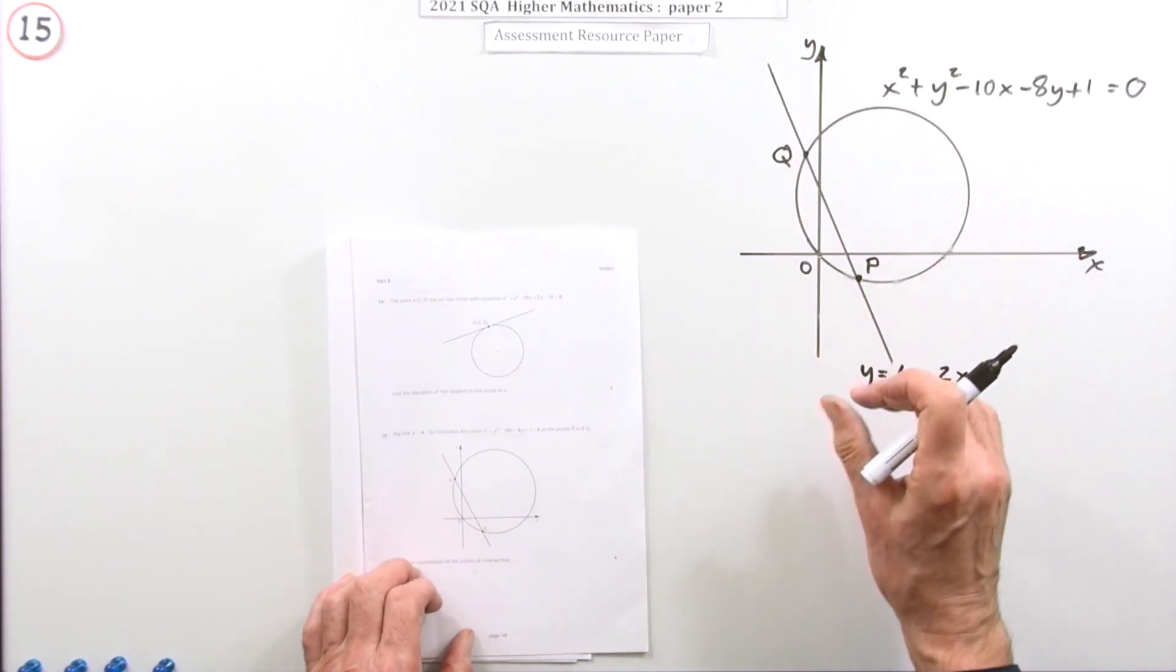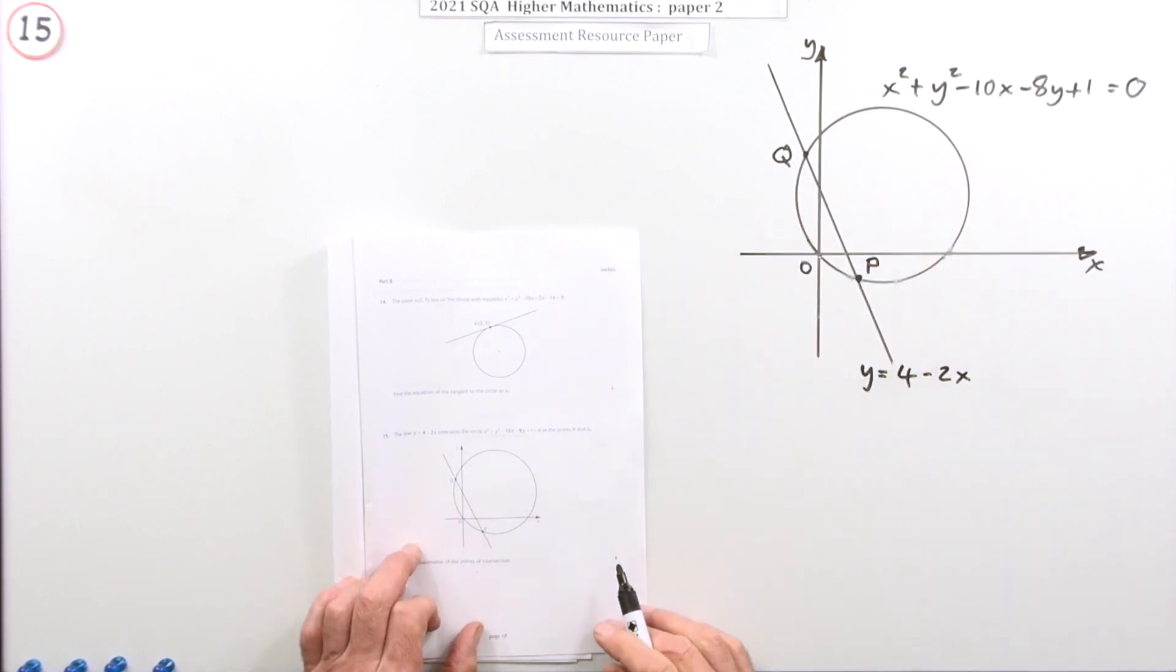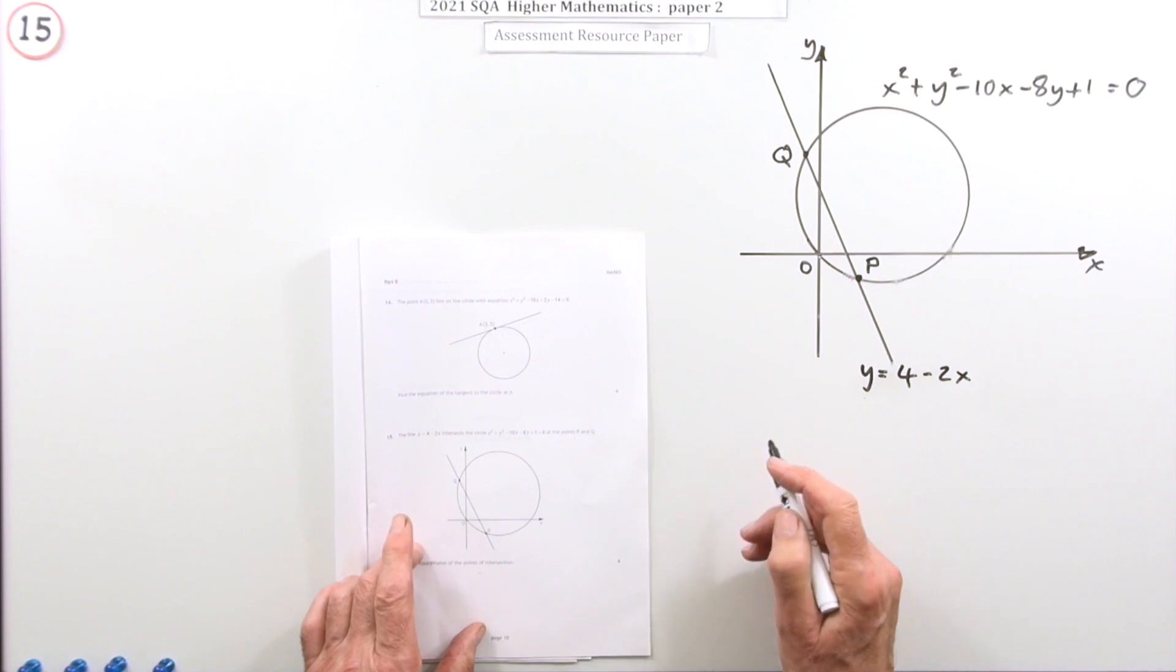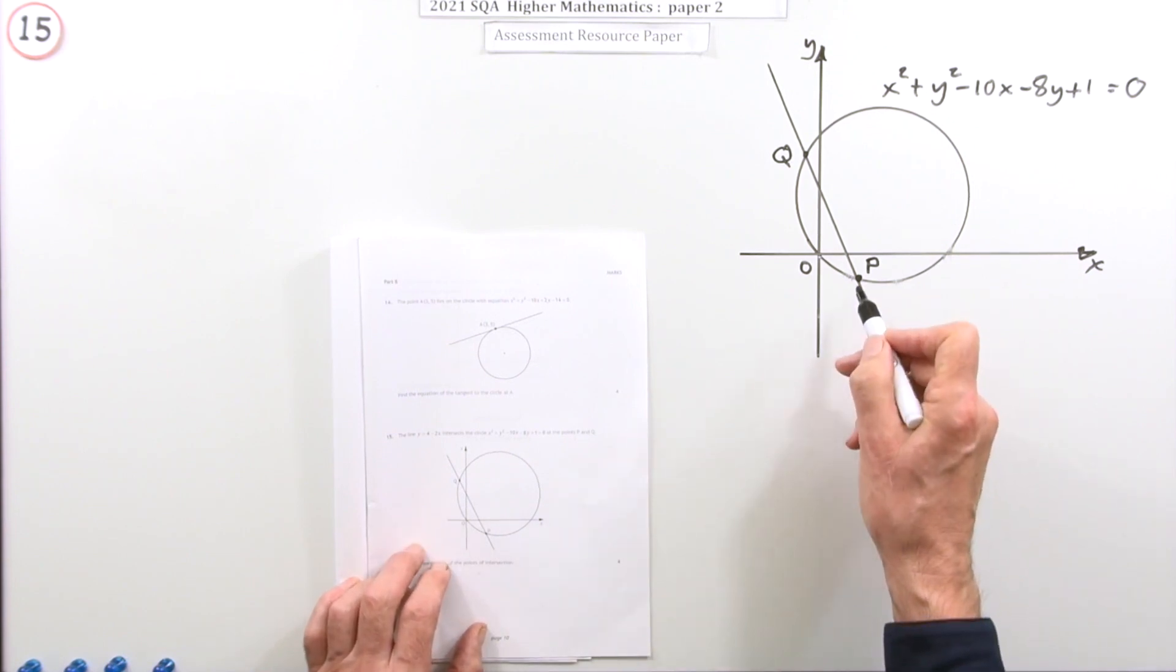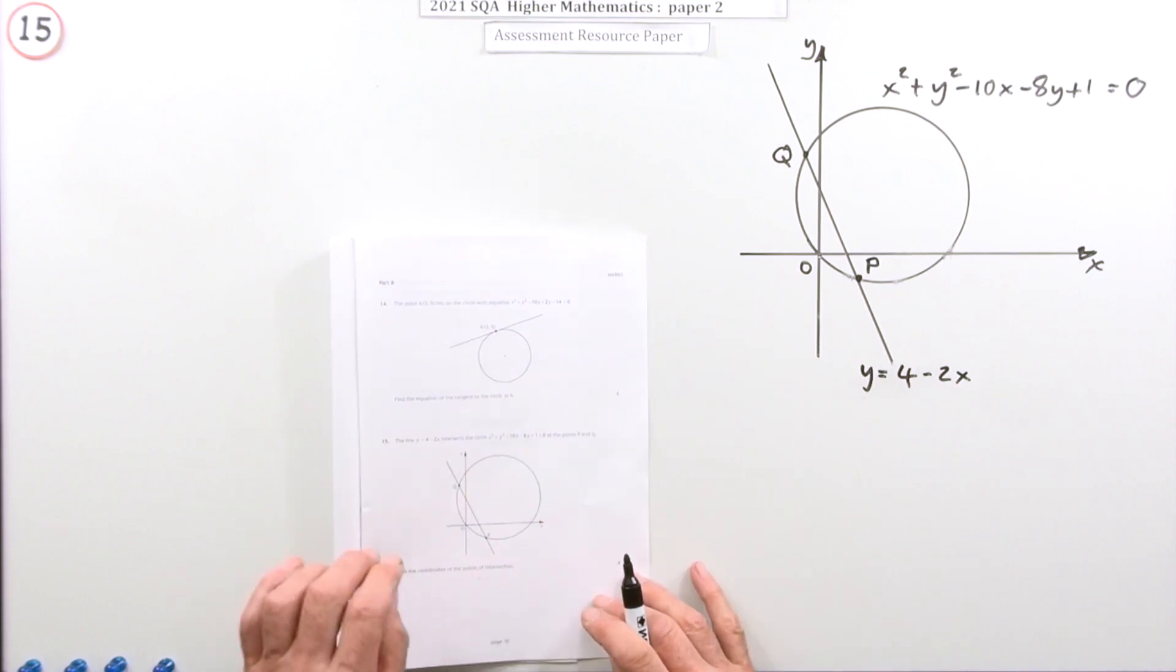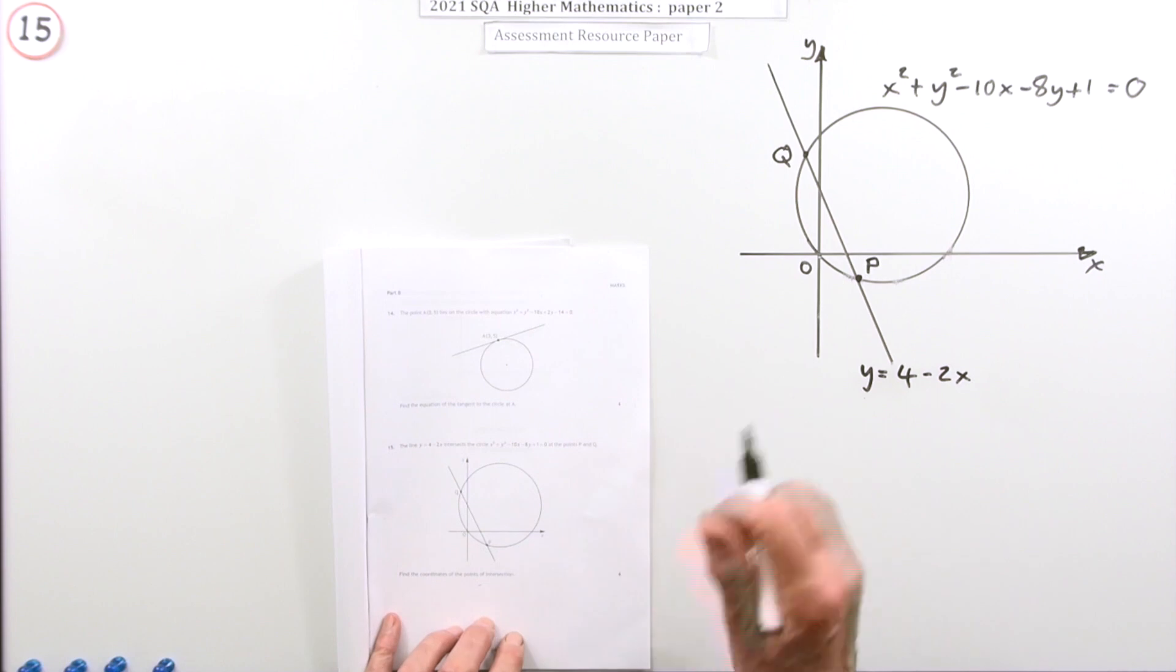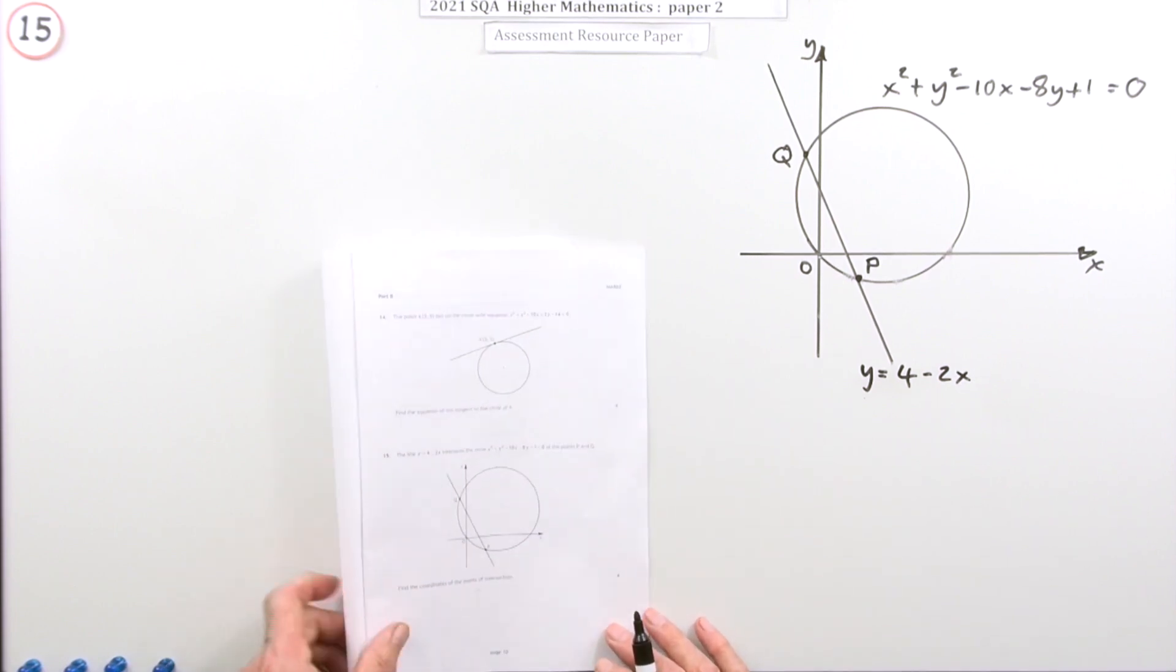You've got a diagram here and the only reason for having the diagram would be so you can identify the points. Yet in the marking scheme there's no mention of identifying which one was P and which one was Q, in which case the diagram's got no relevance at all. I suppose that's just because it was a reduced marking scheme because it wasn't a real exam after all. But anyway, for four marks find the points of intersection.